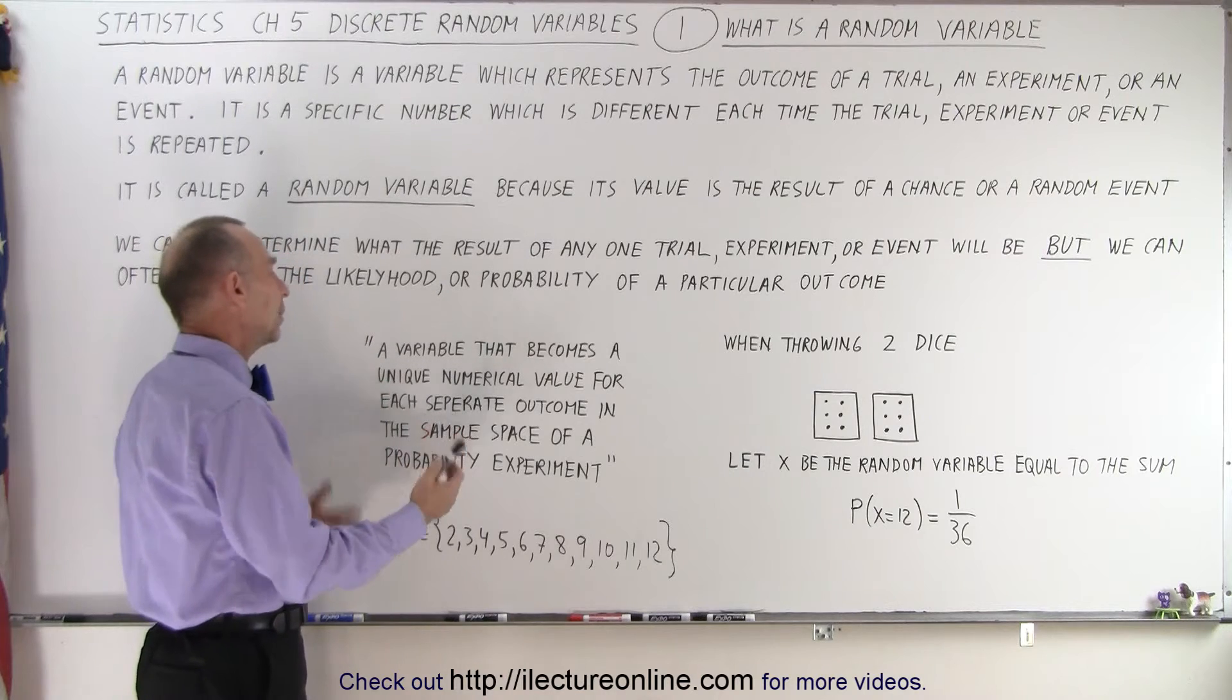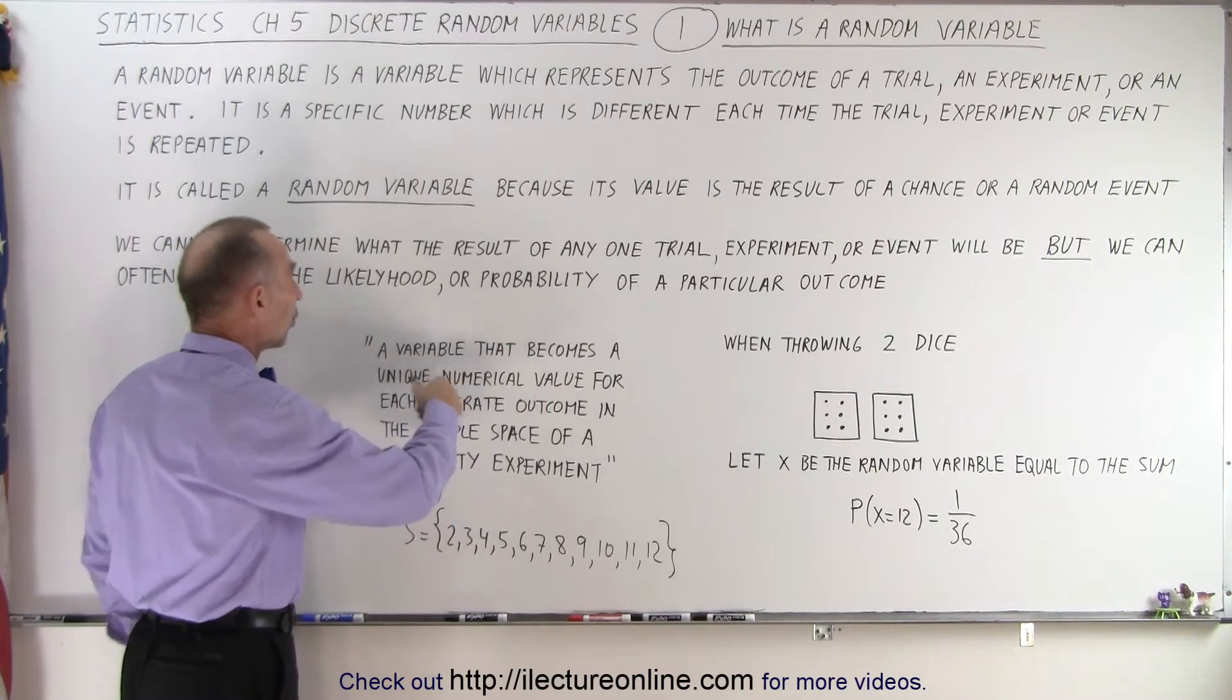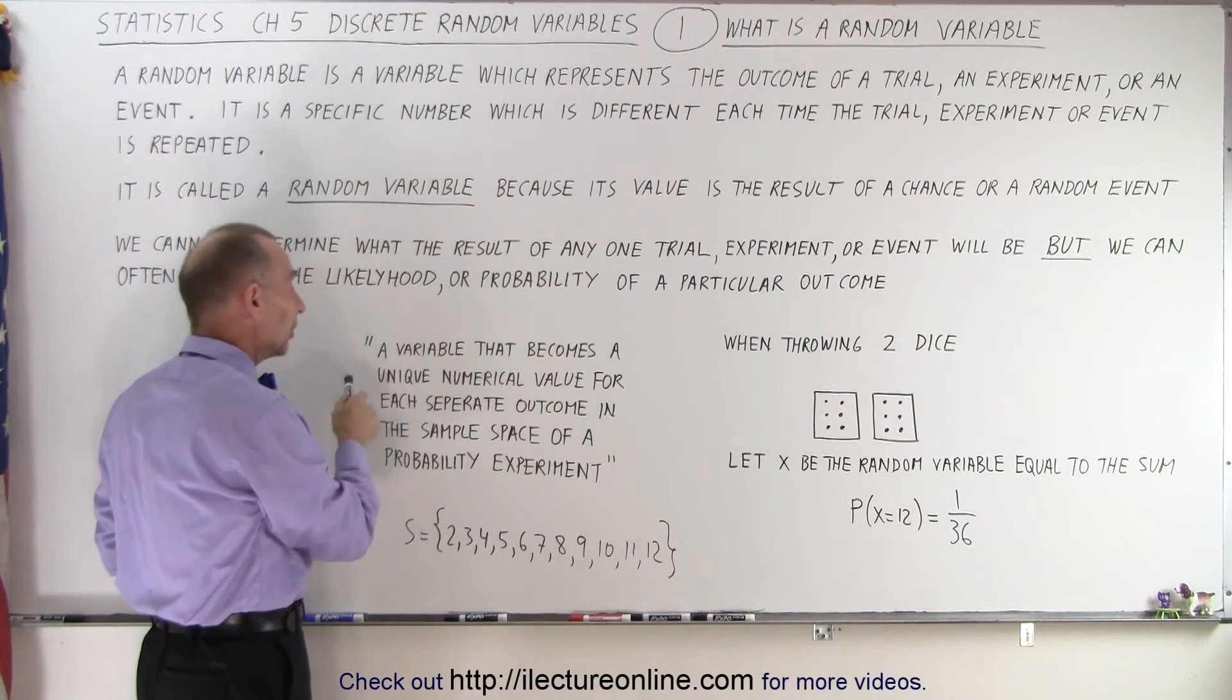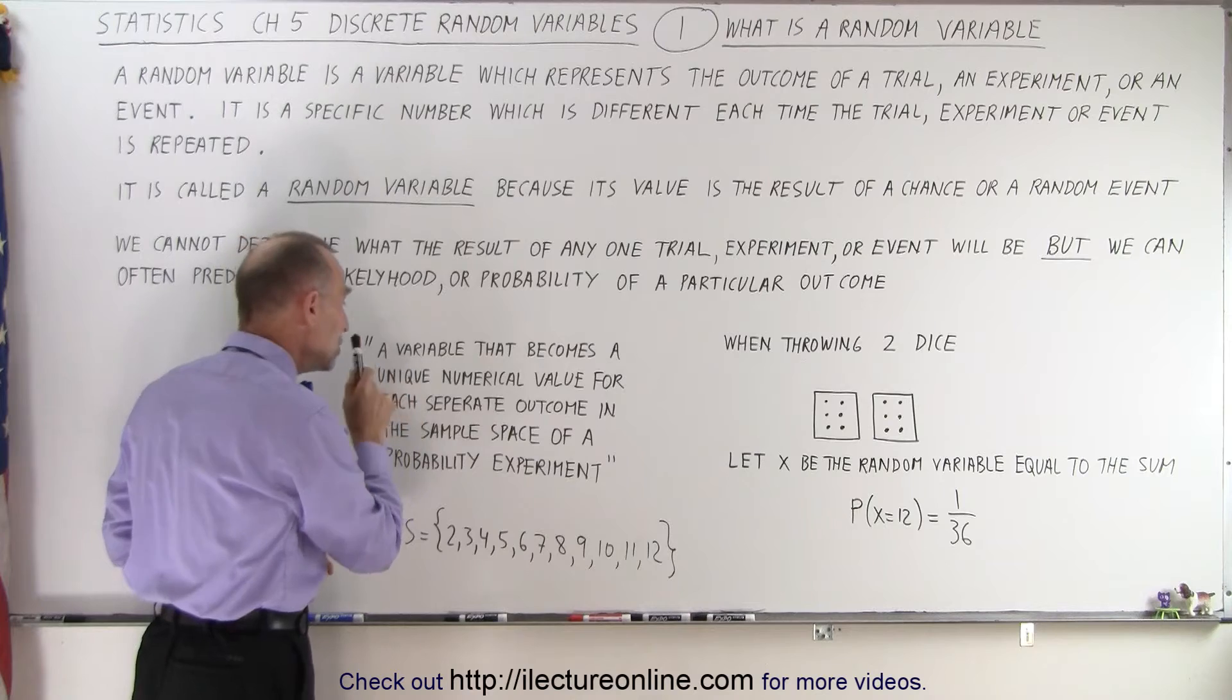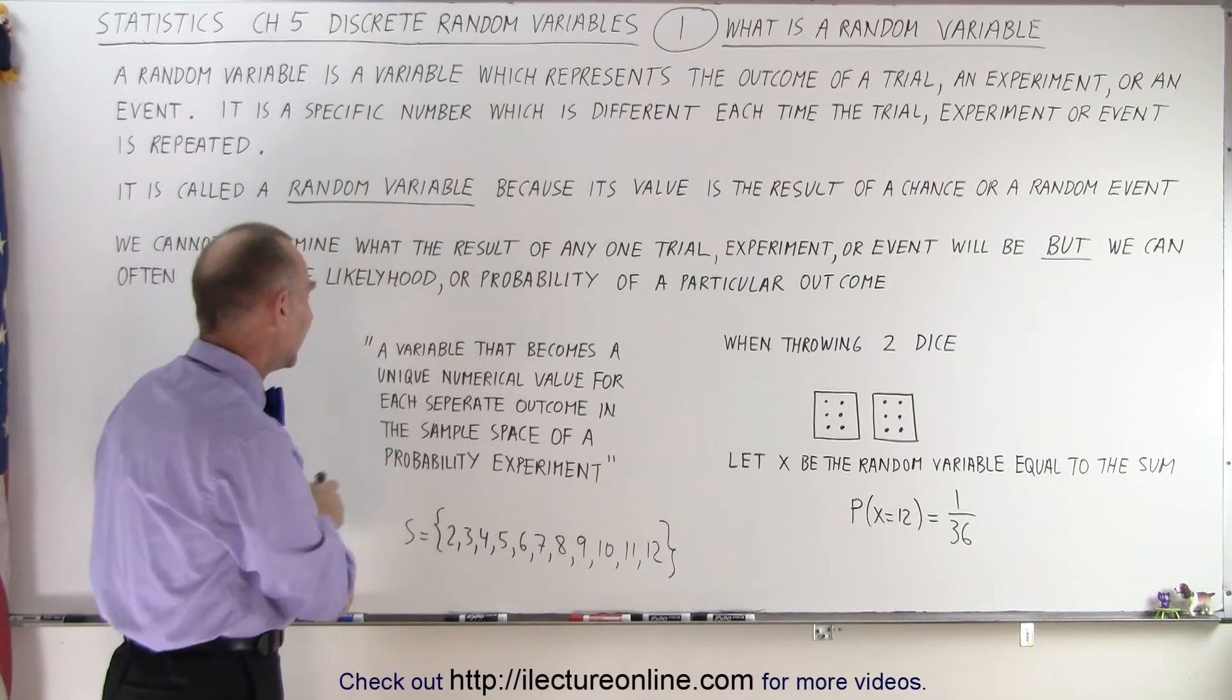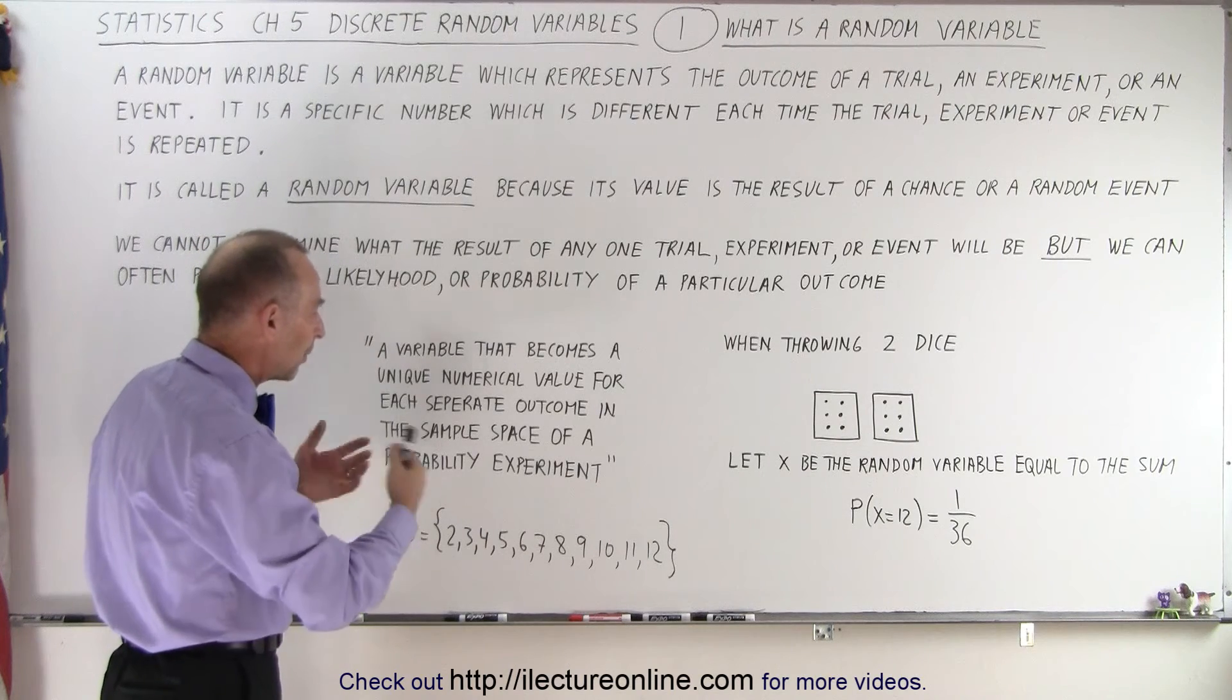So more mathematically, we can describe that a variable—notice we're describing a random variable—a random variable is a variable that becomes a unique numerical value for each separate outcome in the sample space of a probability event or probability experiment.